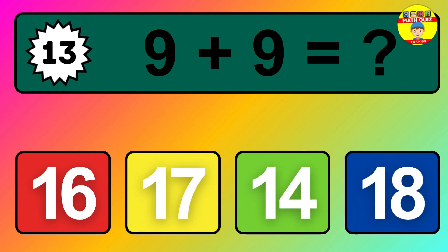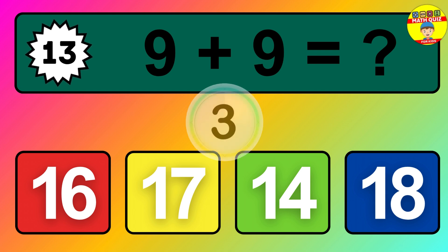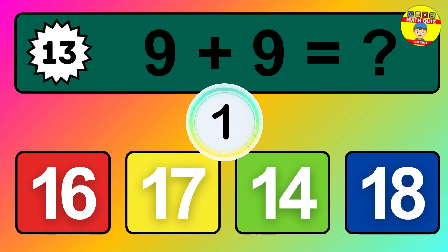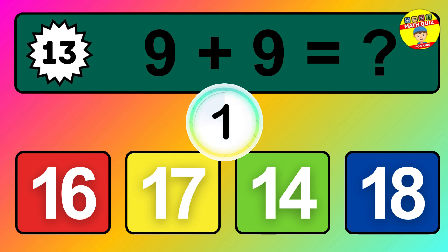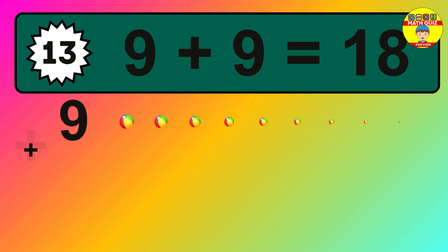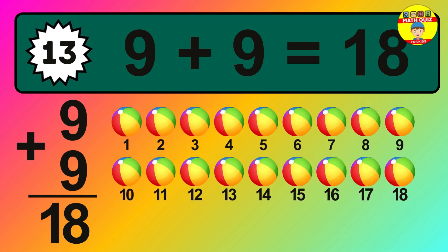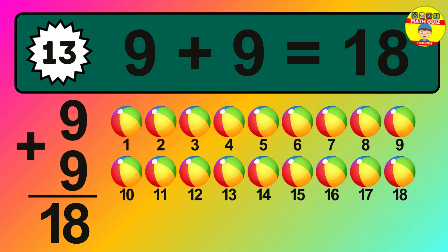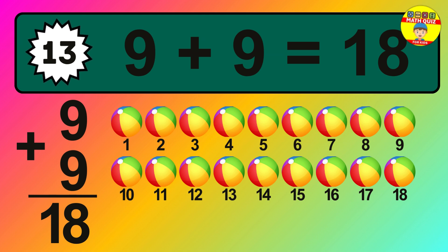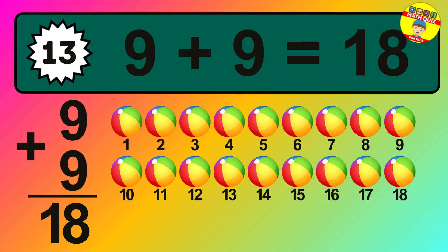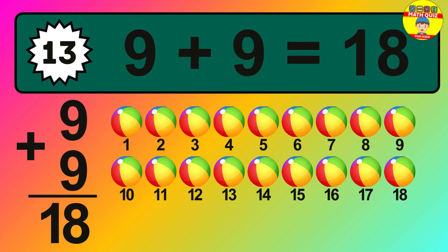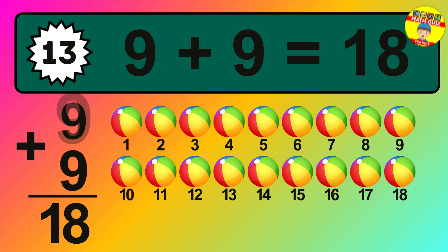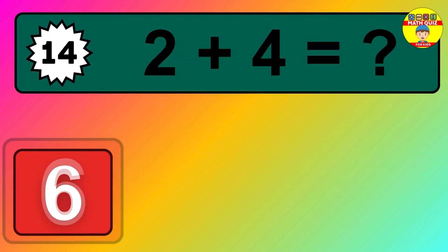Question 13. 9 plus 9 equals what? So the answer is 9 plus 9 is 18. 1, 2, 3, 4, 5, 6, 7, 8, 9, 10, 11, 12, 13, 14, 15, 16, 17, 18.